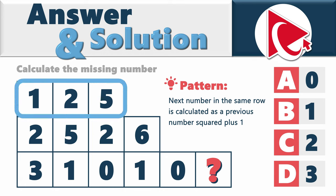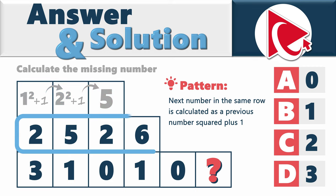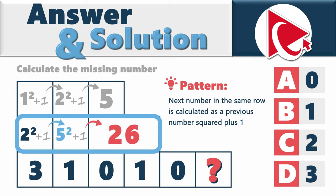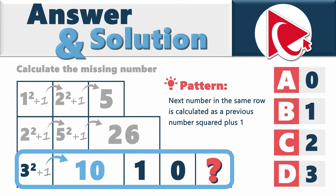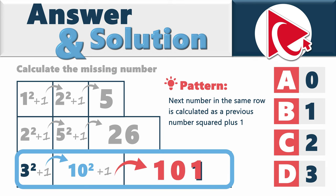For the first row, the calculations are: 1 squared plus 1 equals 2; 2 squared plus 1 equals 5. For the second row: 2 squared plus 1 equals 5; 5 squared plus 1 equals 26. Now for the missing value: 3 squared plus 1 equals 10, and 10 squared plus 1 equals 101. So the missing number is choice B, 1.